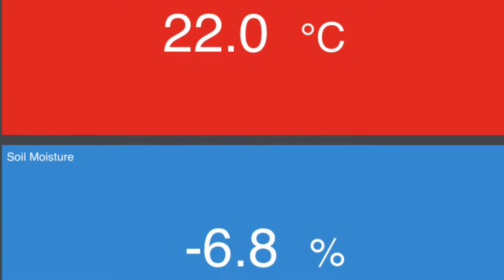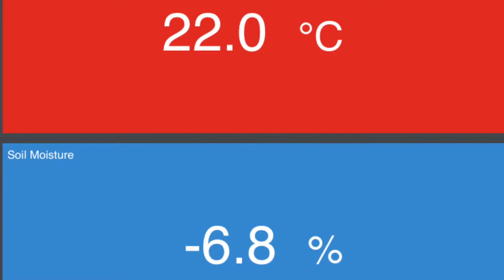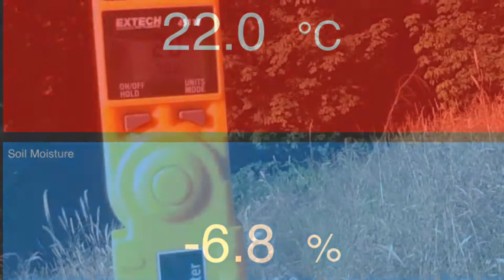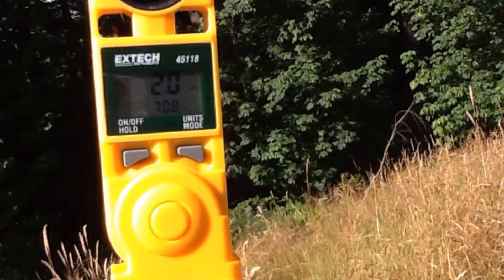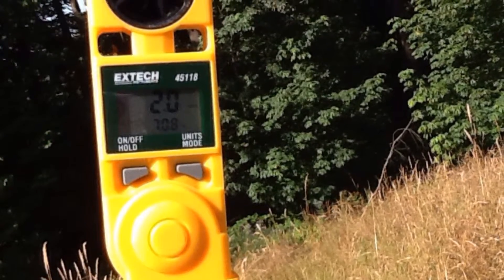In the grasslands, the soil temperature was 22 degrees and the soil moisture was negative 6.8. Wind speed was 2 meters per second.